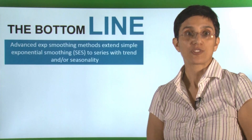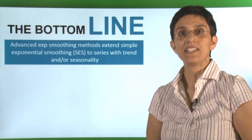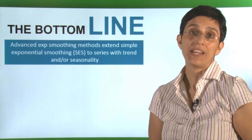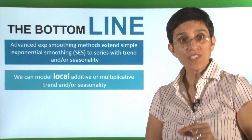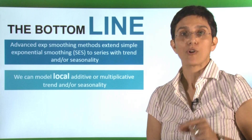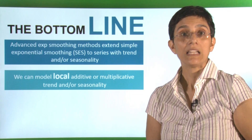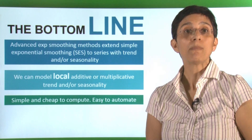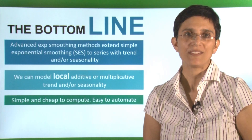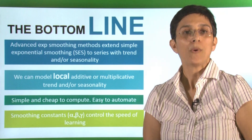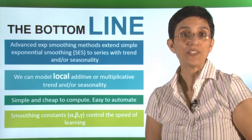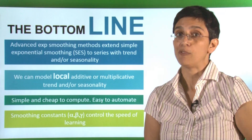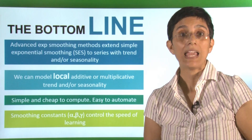The bottom line with advanced exponential smoothing is that it takes the ideas of simple exponential smoothing and extends them so that we can use them with series that have trend, seasonality, or both. Notice that we can model local additive or local multiplicative trend or seasonality — these are patterns that might change throughout the series. The methods are simple and computationally cheap, which is why they're easy to automate. We have three smoothing constants in Holt-Winters method, and these control the speed of learning from the data — how fast we update the level, the trend, and the seasonal components.